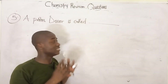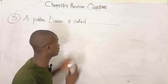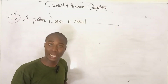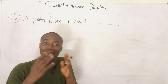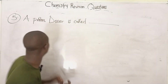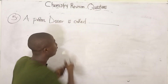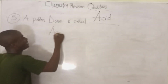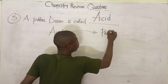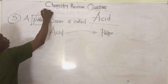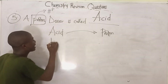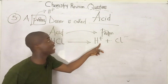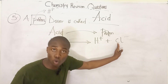Moving to question five, the last question for this video lesson: a proton donor is called what? Proton donors are called acids. Acids donate protons in the form of the hydrogen ion (H⁺). For example, HCl dissociates into H⁺ and Cl⁻. The H⁺ is the hydrogen ion and the Cl⁻ is the chloride ion.